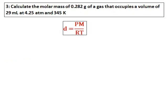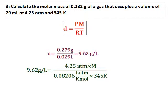Calculate the molar mass of 0.282 grams of a gas that occupies a volume of 29 milliliter at 4.25 atm and 345 kelvin. So the formula I am going to use is, since the molar mass is asked, the formula I will use will be d equals PM over RT. Density is not given, but definitely I can calculate it from the mass given and the volume given. I am calculating the density, the unit of grams per liter, because the volume unit should be in liter if I am going to use R as 0.0806. So then I have all the values.